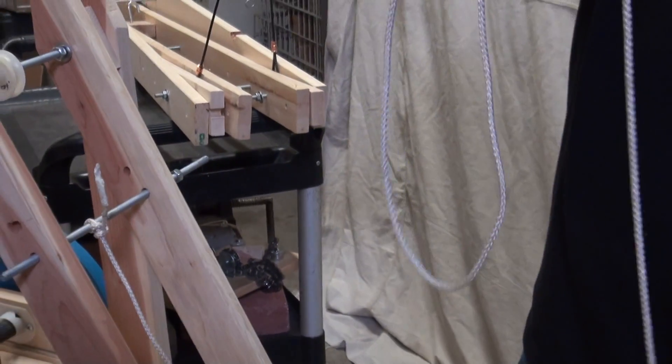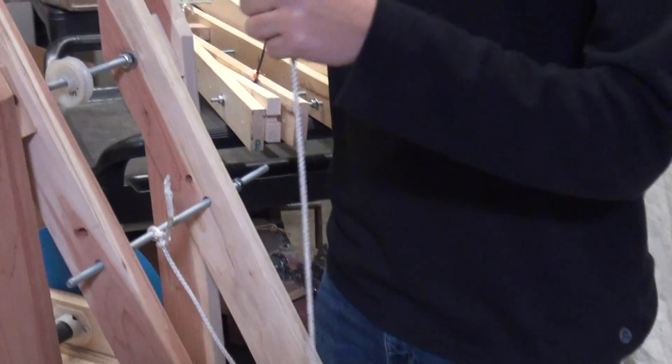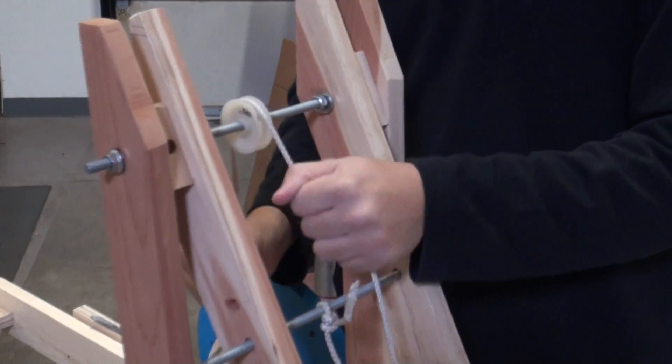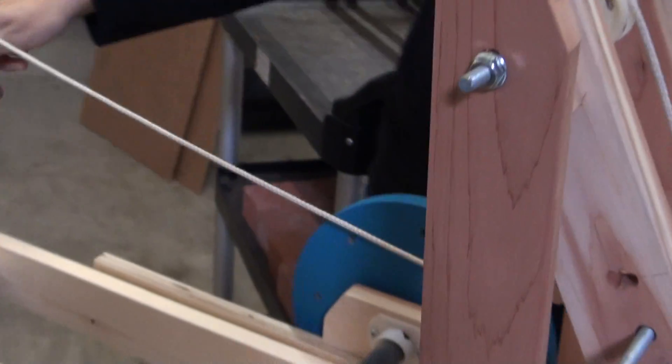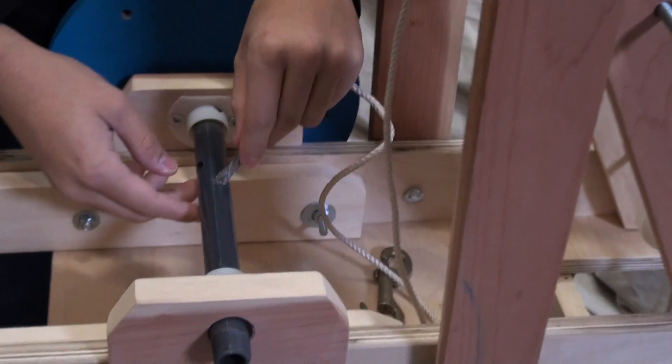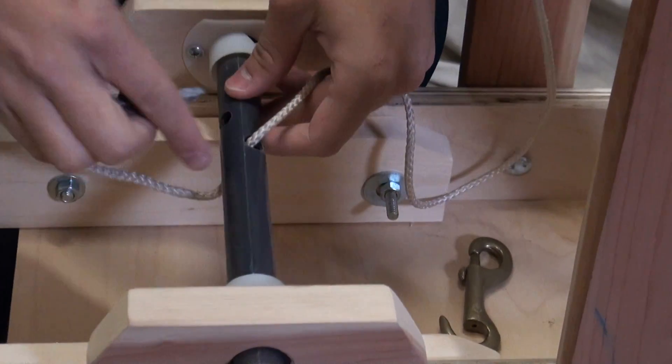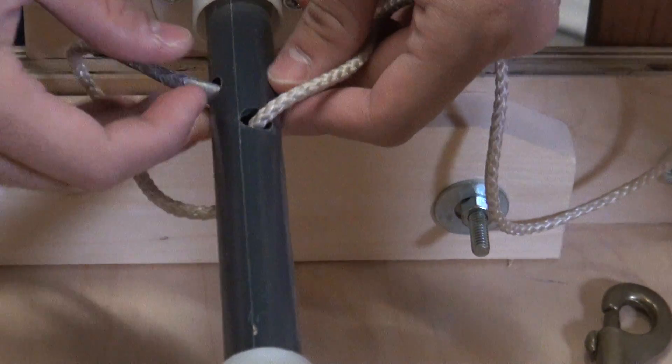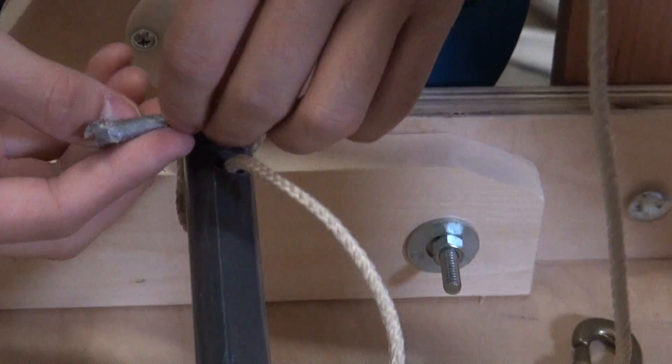And then where does it go? Thread it through. Now it goes over the top of this pulley wheel. Okay. And into the hole drilled out in the windlass. The shaft of the windlass has two holes in it. Through one and the other. And just tuck it in.